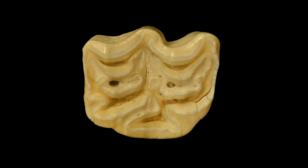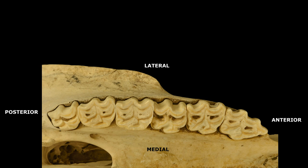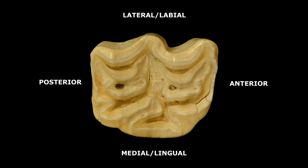Here is the occlusal side of the individual molar. This is the side we are going to measure the anterior-posterior length, or APL. Remember back to the teeth in the skull, where anterior was to the front and posterior was to the back. That is how we are going to measure the APL, from anterior to posterior, indicated here with the red line.